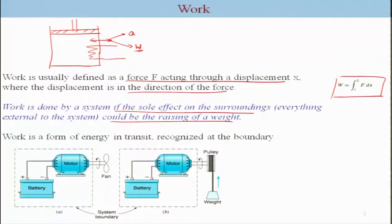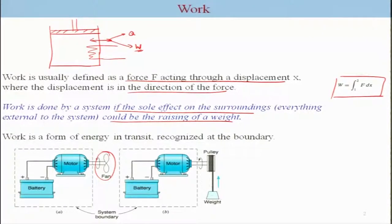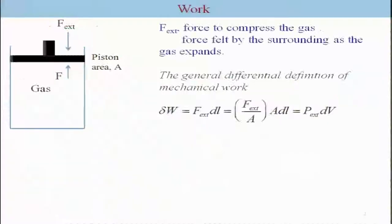We can take an example of a battery-motor used to run a fan. The effect of work by the system on the surrounding can be understood by replacing the fan with a pulley-weight system, so that as the shaft rotates its effect is to raise the weight through the pulley. This is a generic definition of work. Work can be of different types; one is boundary work, which occurs when the boundary is movable.